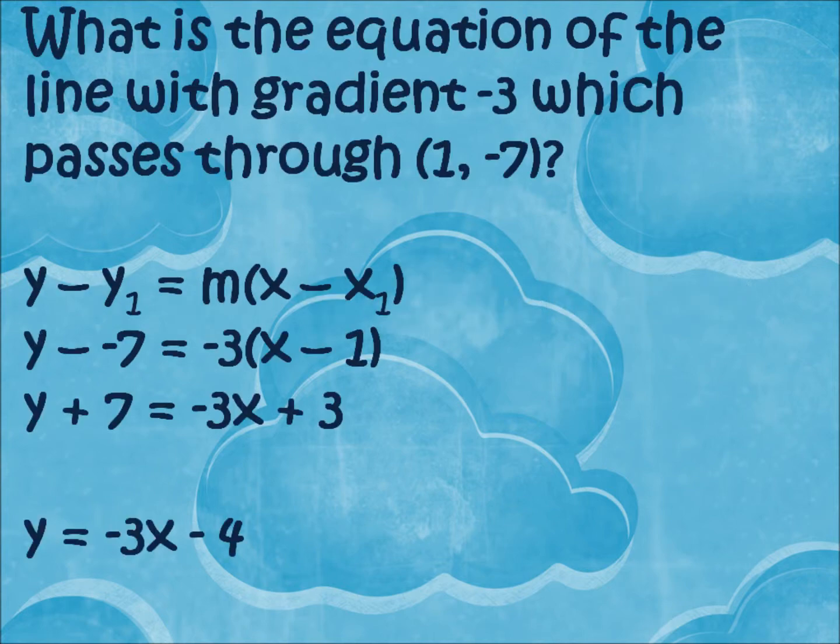I know if you've already been given the gradient and just one point, then it's just a little less work than before. Use the formula: Y minus Y1 equals m times x minus x1.